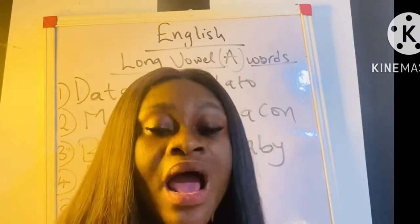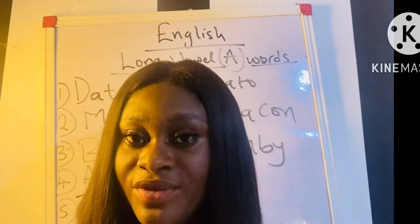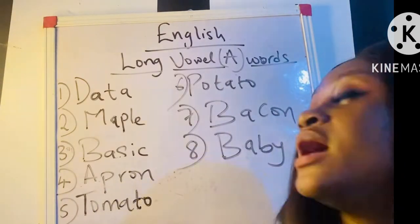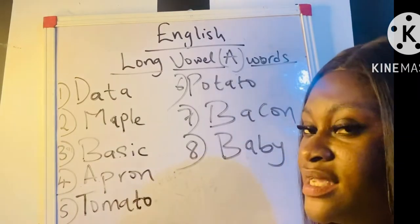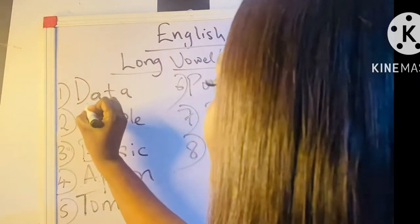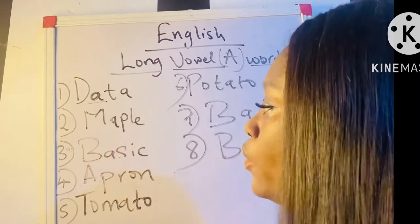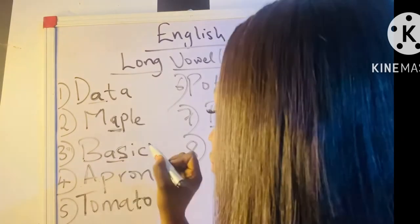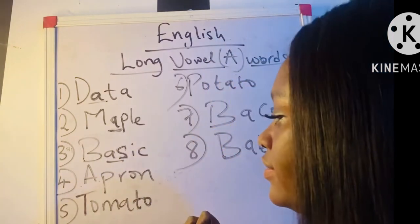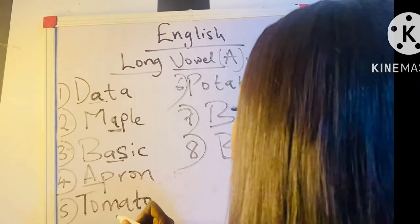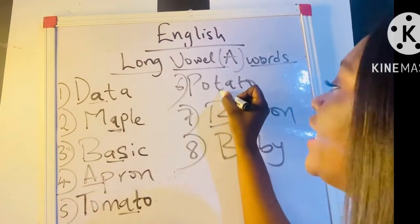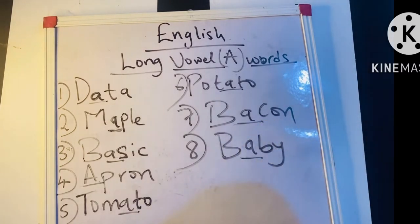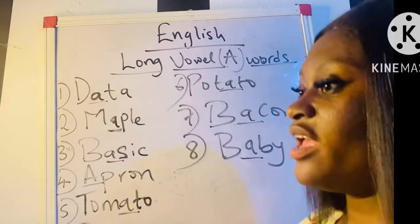Make sure you have your writing materials with you. I have eight words on the board. I have: data, maple, basic, apron, tomato, potato, bacon, and baby. These eight words all sound the long A — you can hear the A sound inside each one — and I am going to teach you how to spell them.